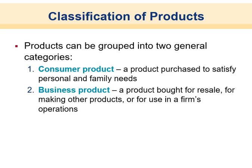How we classify products matters. They can be put into two categories. The first is a consumer product, which is a product purchased to satisfy personal or family needs — basically anything you can go to the store for. The other is a business product, bought for resale as an input into another product or part of a firm's operations — like lumber for a contractor, or meat that a business buys to make hamburgers.